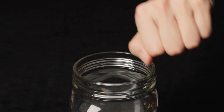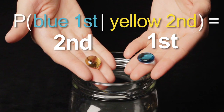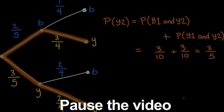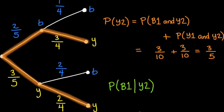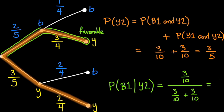Here's another interesting question: what is the probability that the first marble drawn is blue, given that the second marble drawn is yellow? Intuitively, this seems tricky. Because we are conditioning on the event that the second marble drawn is yellow, our sample space is restricted to these two paths. Of these two paths, only the top one meets our criterion that the blue marble is drawn first. We represent the probability as a fraction of favorable to possible outcomes. Hence, the probability that the first marble drawn is blue, given that the second marble drawn is yellow, is three-tenths divided by three-tenths plus three-tenths, which works out to one-half.